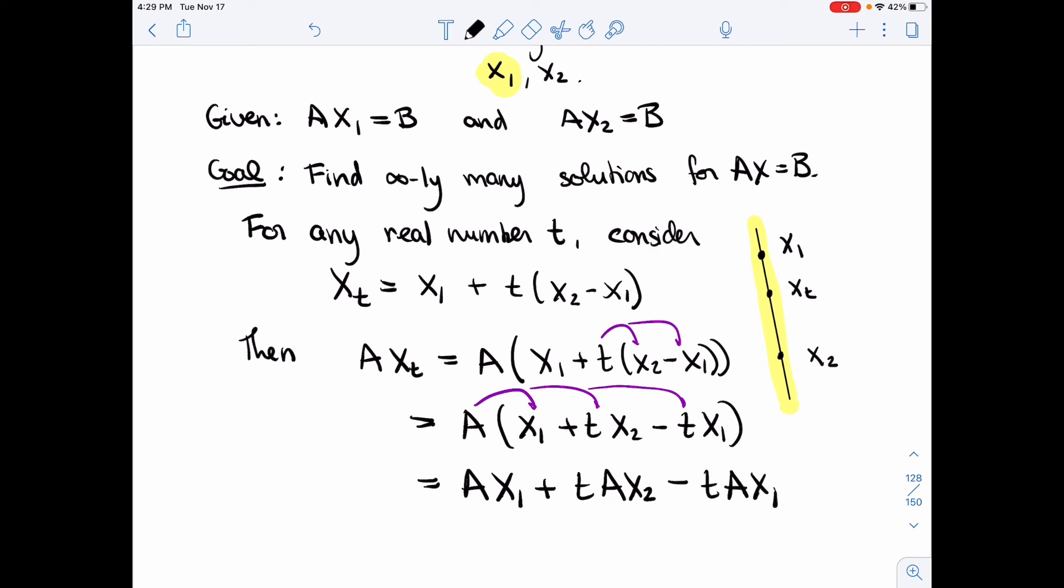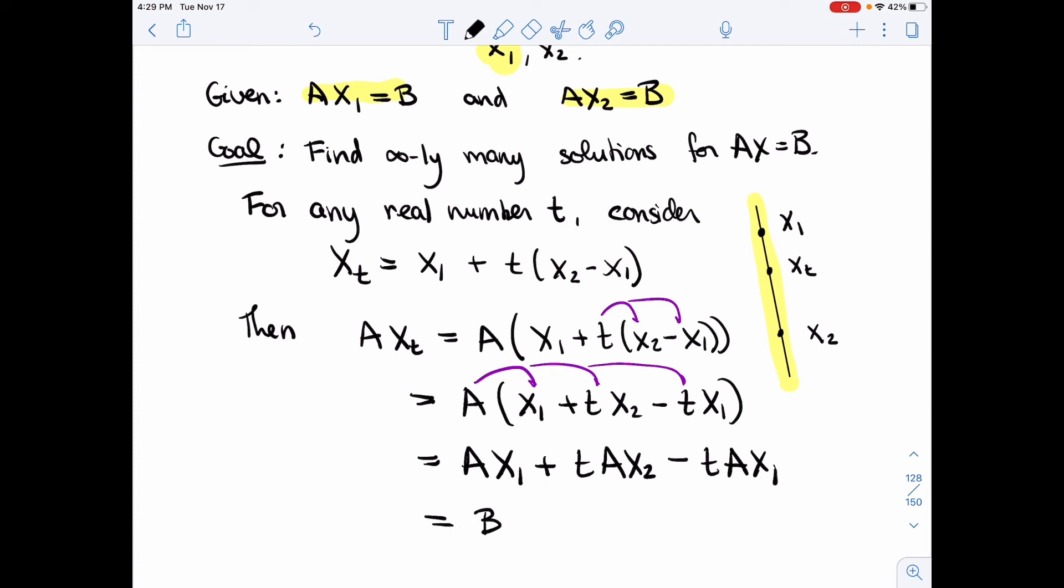This seems complicated, but we've assumed that Ax1 and Ax2 were solutions, so I'm getting B plus tB minus tB, which equals B.